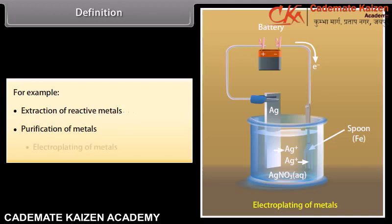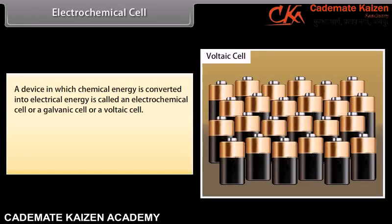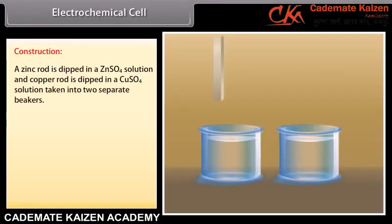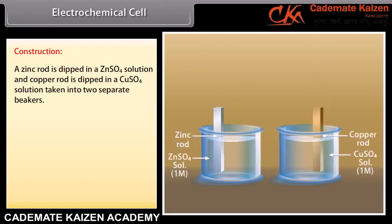Students, today we will study about electrochemistry. At the end of this lesson, you will be able to: define electrochemistry, understand electrochemical cell, know significance of salt bridge, represent an electrochemical cell, define electrode potential, calculate EMF of the cell, define standard hydrogen electrode, calculate Nernst equation, calculate Gibbs energy, classify electrolytes, calculate electrical resistance and conductance, calculate cell constant, and explain Kohlrausch's law.